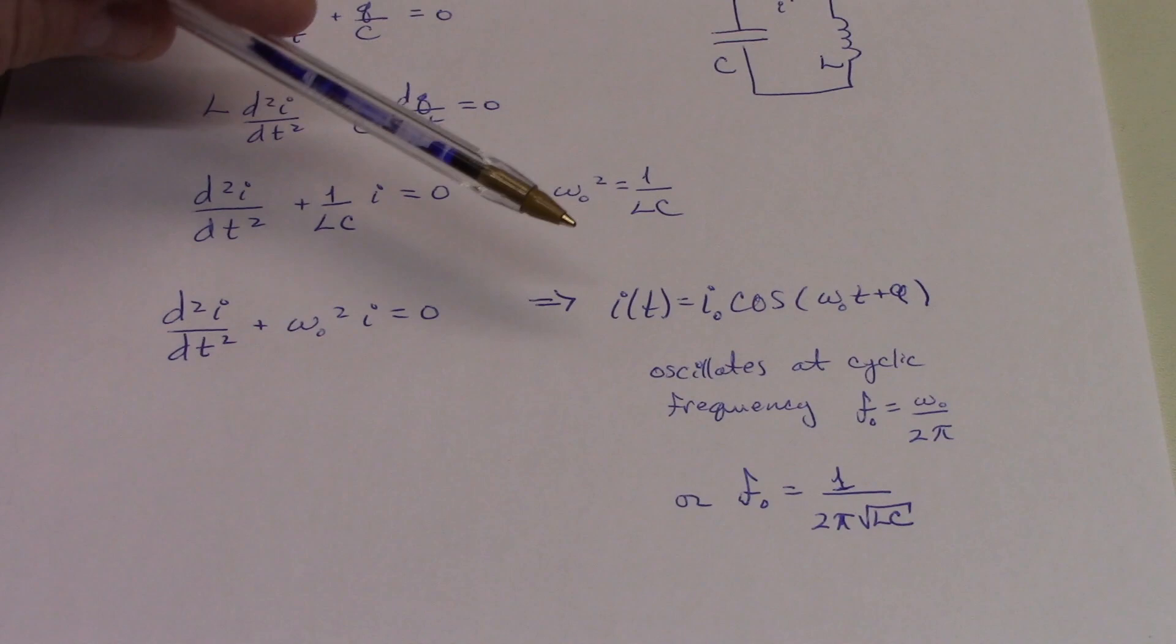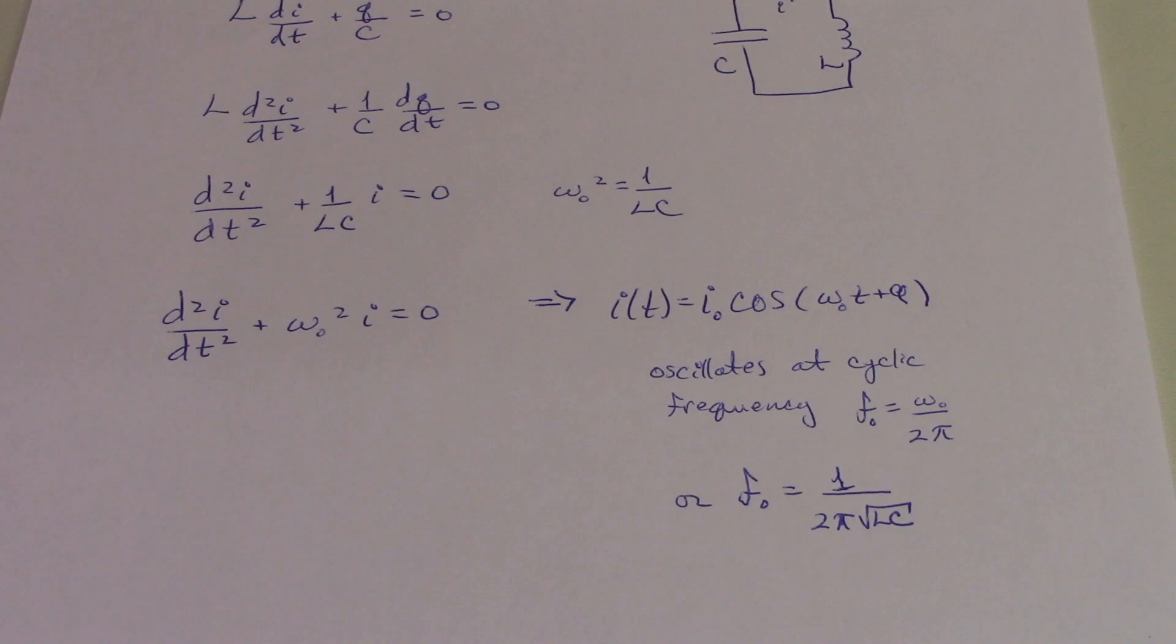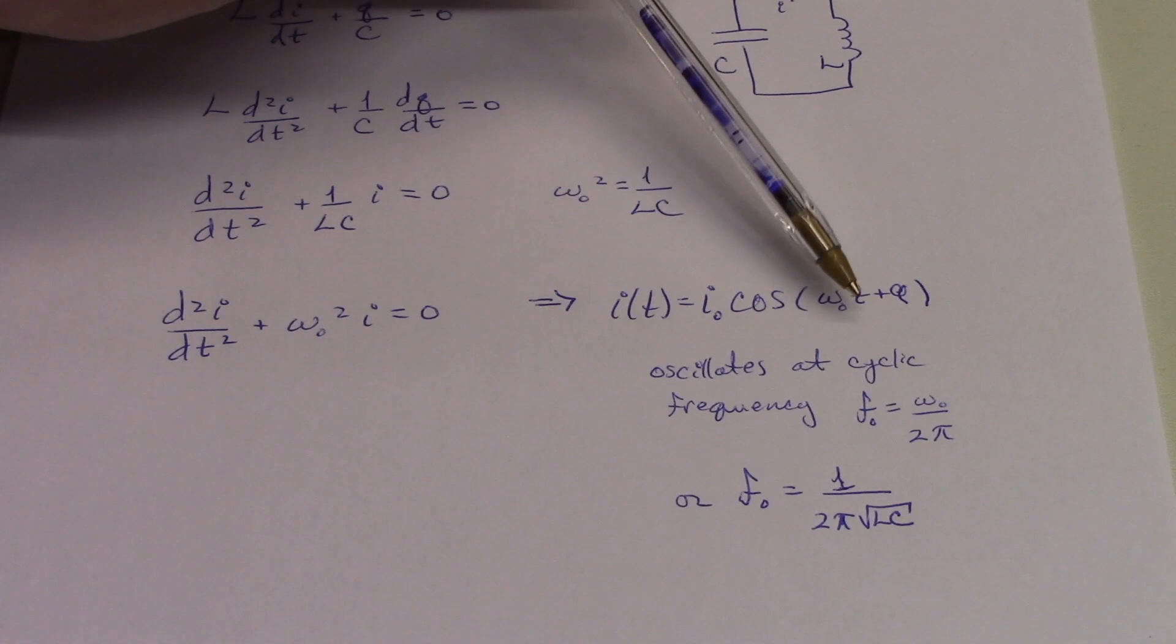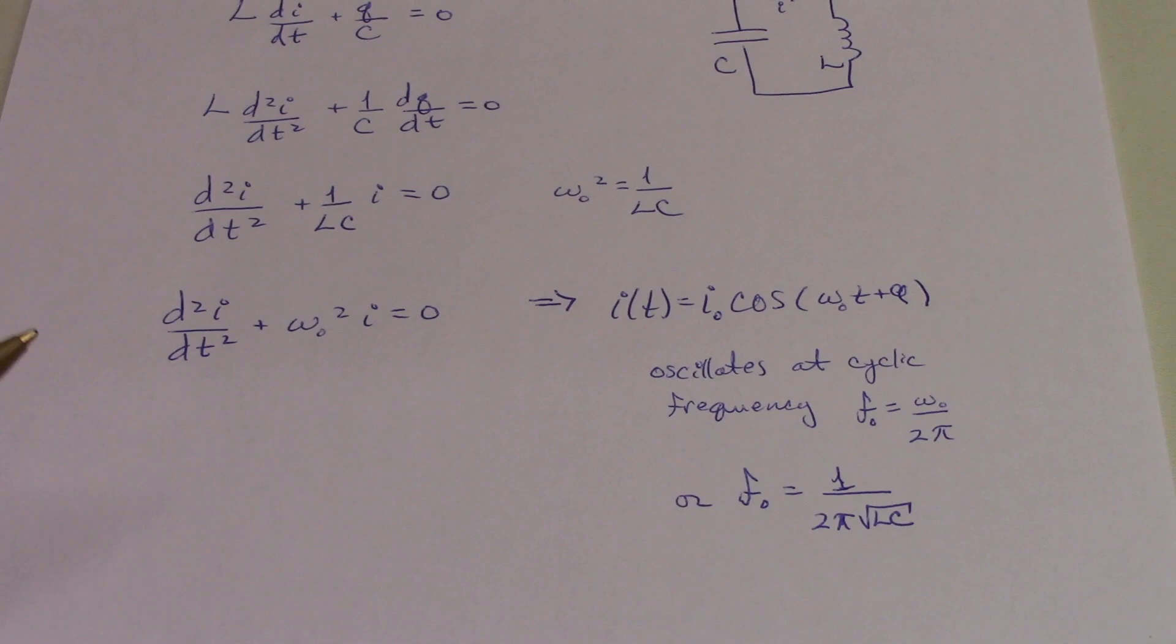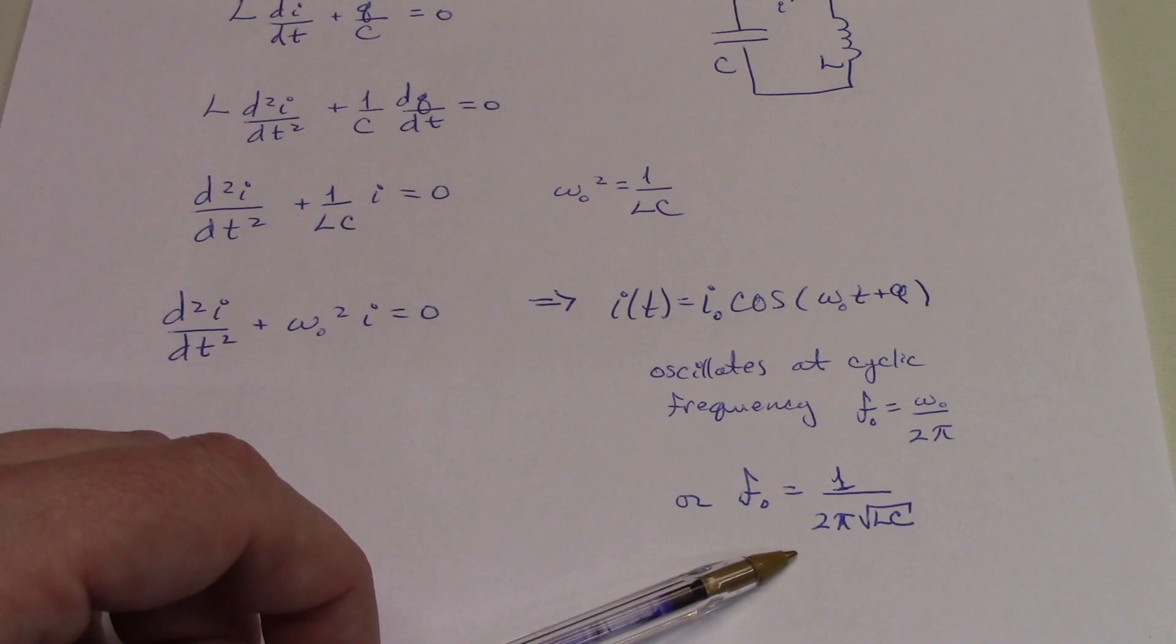Well, for one thing, this tells us that the current changes in a smooth and continuous way, and functionally that is a sinusoidal oscillation. And that it oscillates at a particular frequency, the cyclic frequency f0 is equal to omega naught over 2π. But writing omega naught as 1 over the square root of LC, we have the cyclic frequency, or the resonant frequency, being 1 over 2π square root of LC.